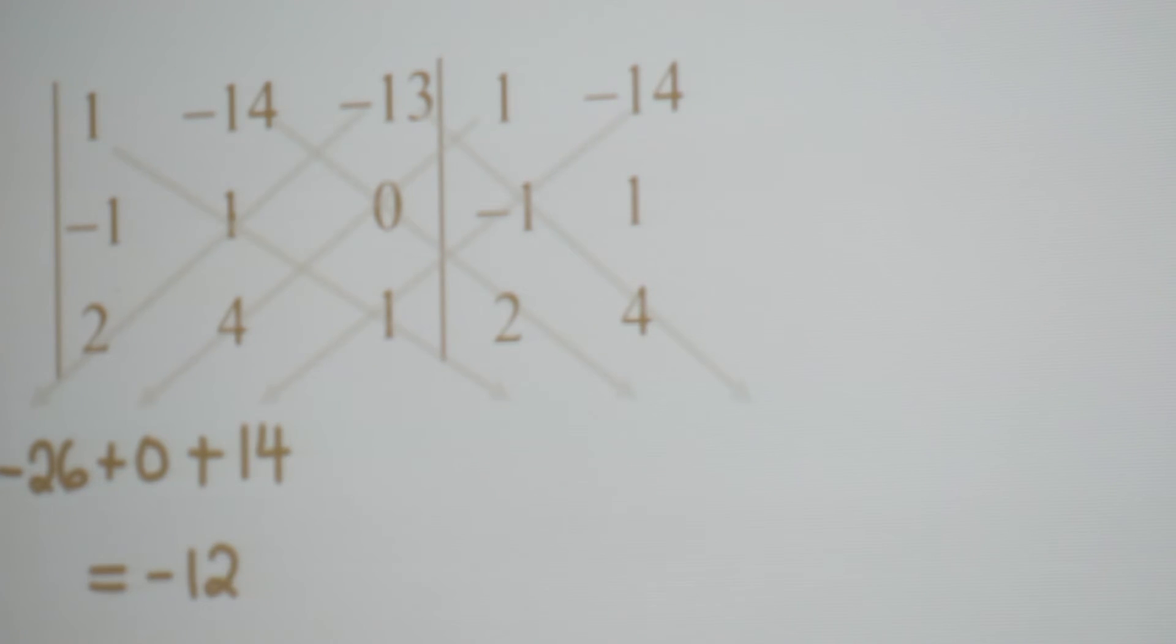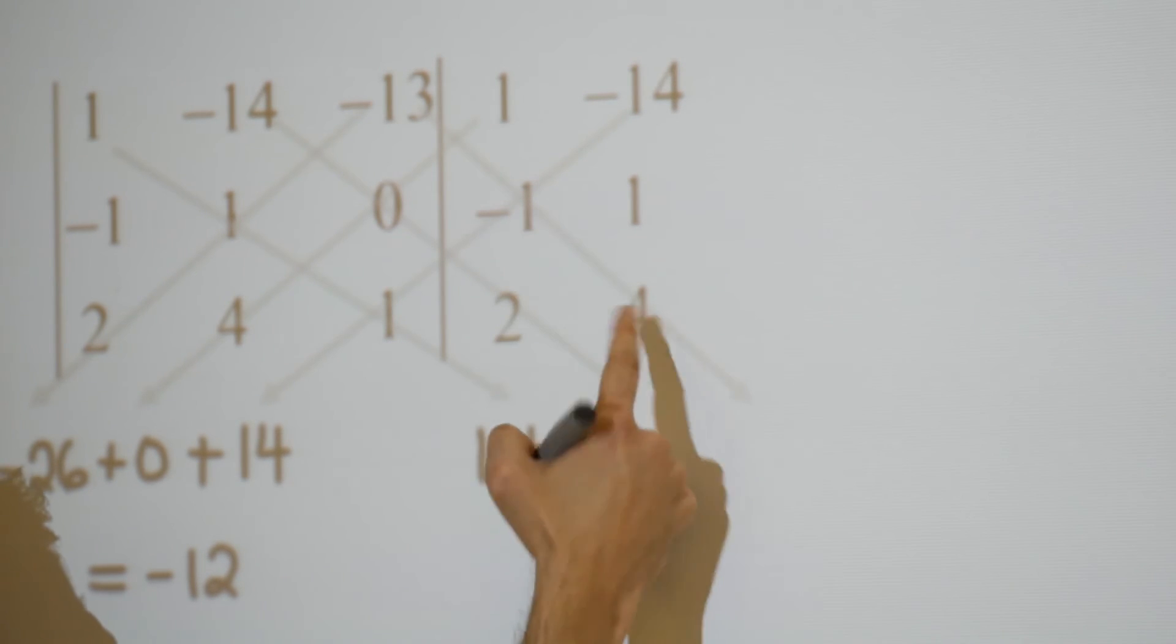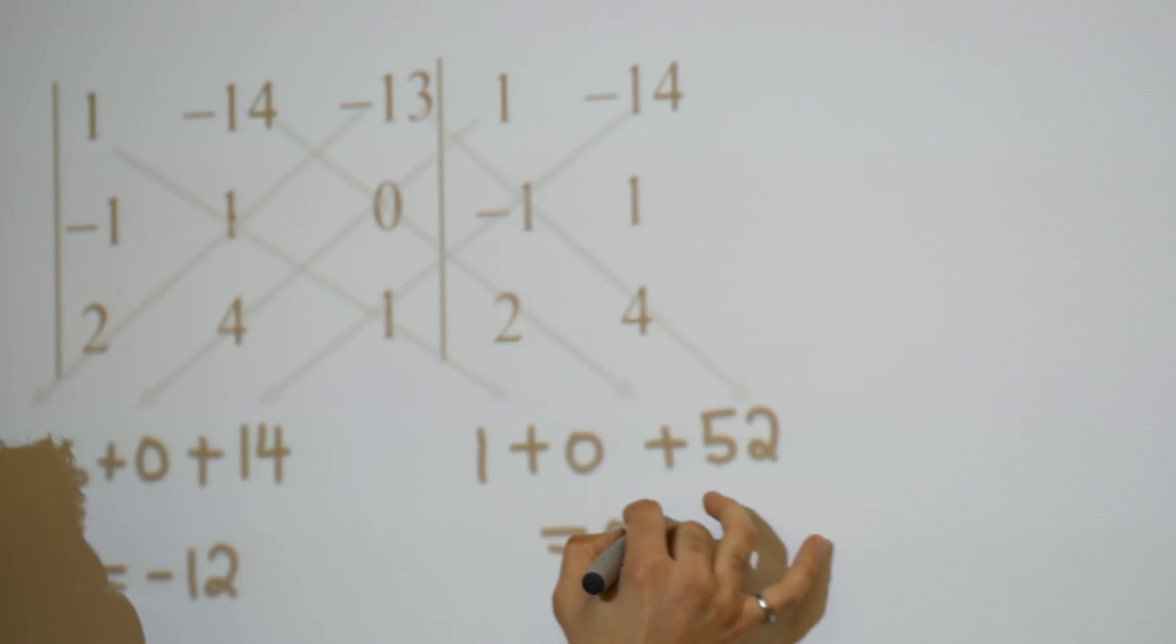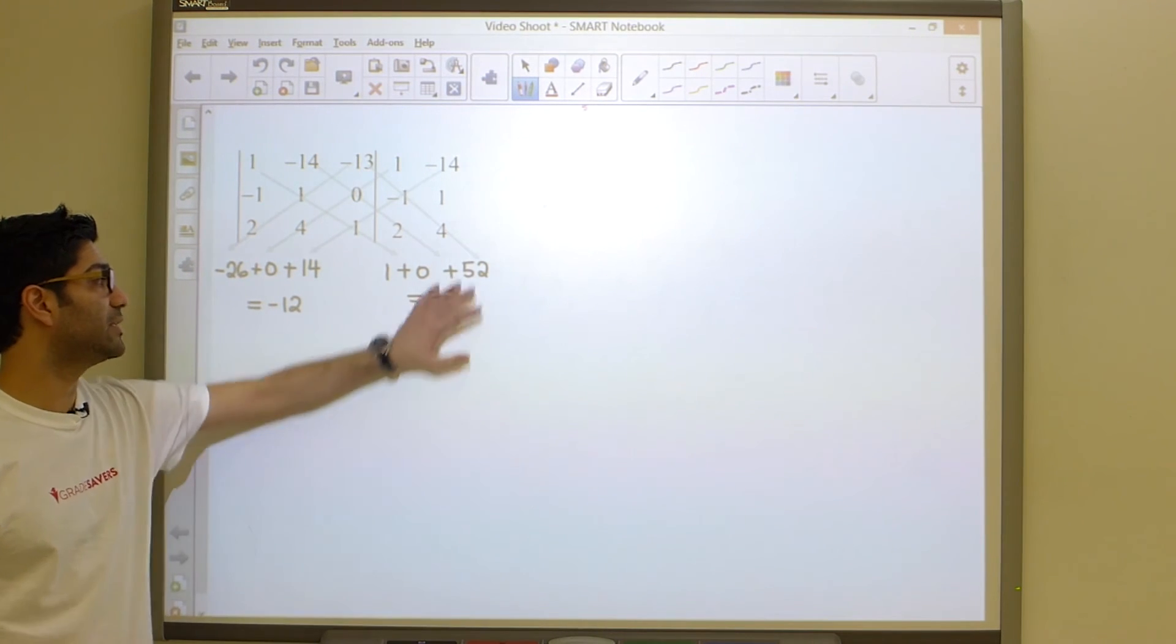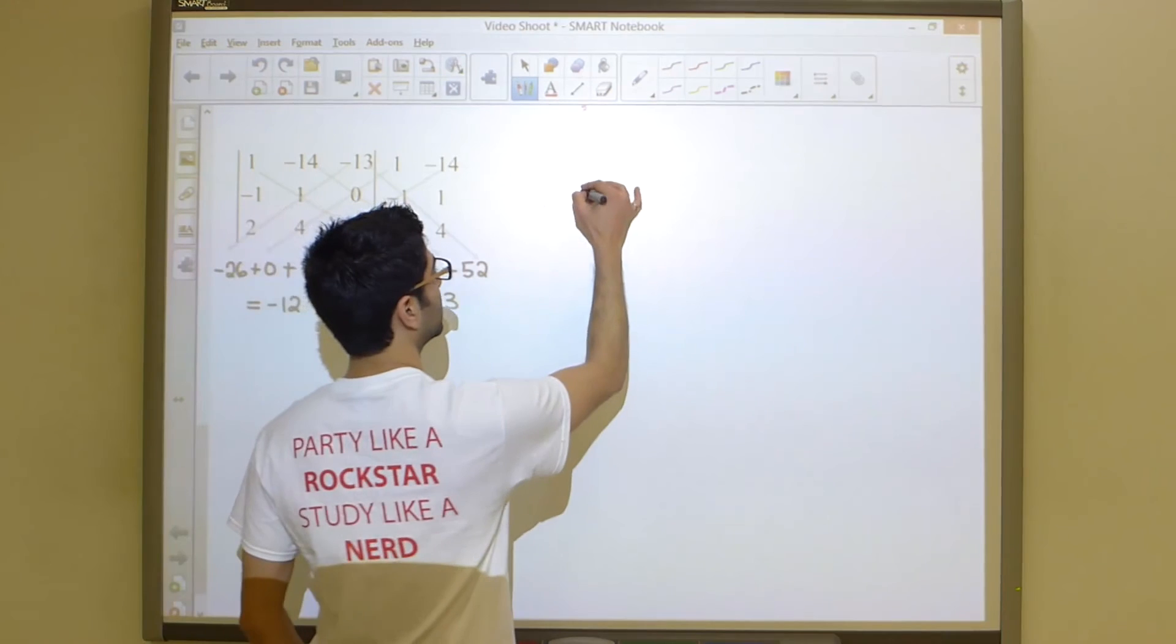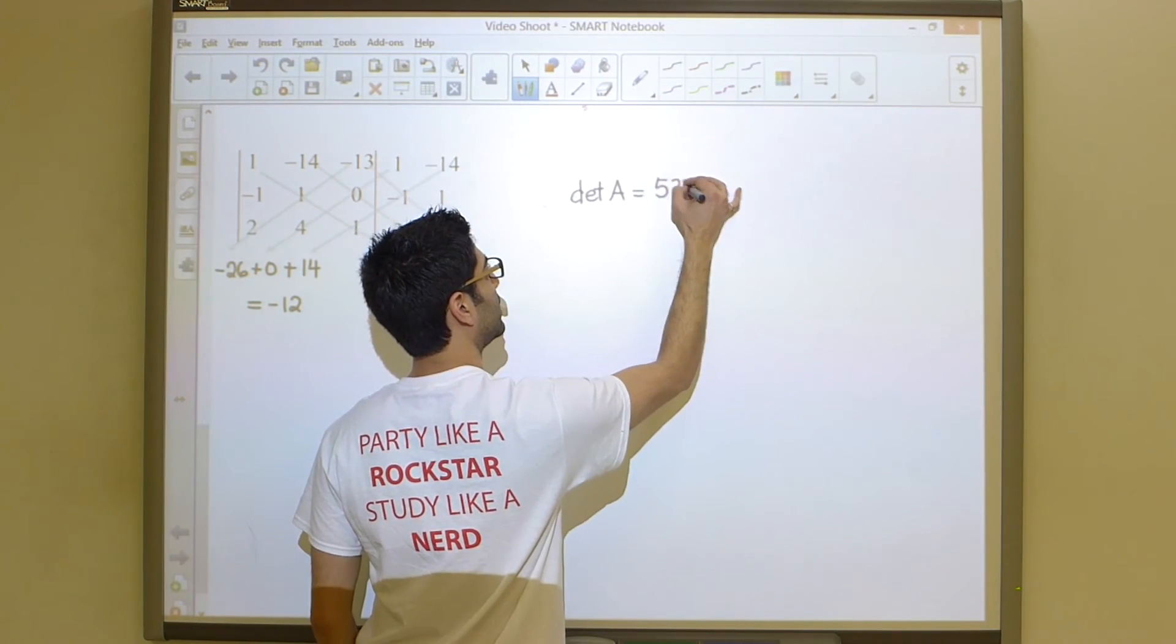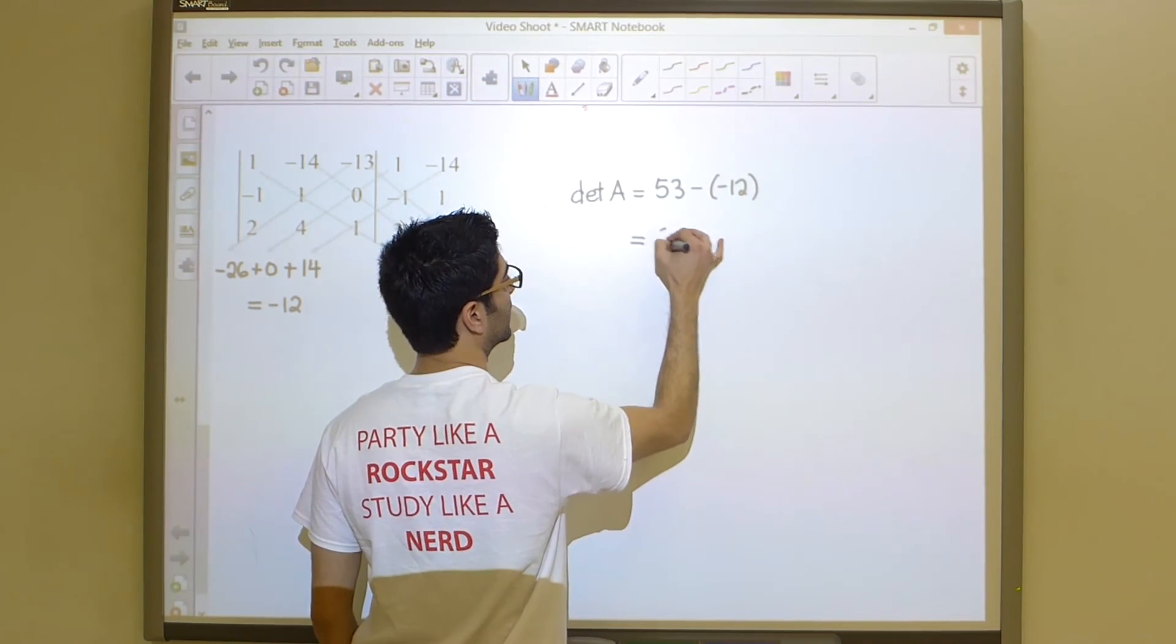And now I'm going to repeat this process on this side. So 1 times 1 times 1 is 1, plus 0, plus 13 times 1 times 4 is going to be positive 52, for a grand total of 53. This being said, remember what our final answer is going to be. It is the right side minus the left side. So the determinant of our given matrix is going to be 53, the right side, minus the left side, or 65.